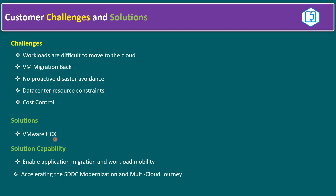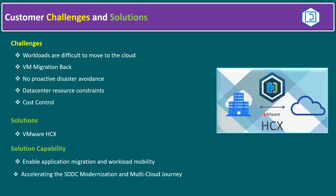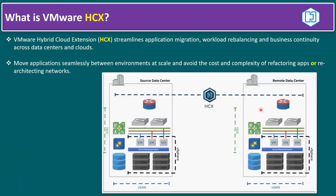Using HCX, we can migrate from on-premises to private cloud, on-premises to public cloud, and also migrate VMs back from public to private — both directions are possible. Any-to-any migration is supported: on-premises to private, private to on-premises, public cloud to on-premises, or public cloud to private. Any kind of migration is possible using this Hybrid Cloud Extension solution.